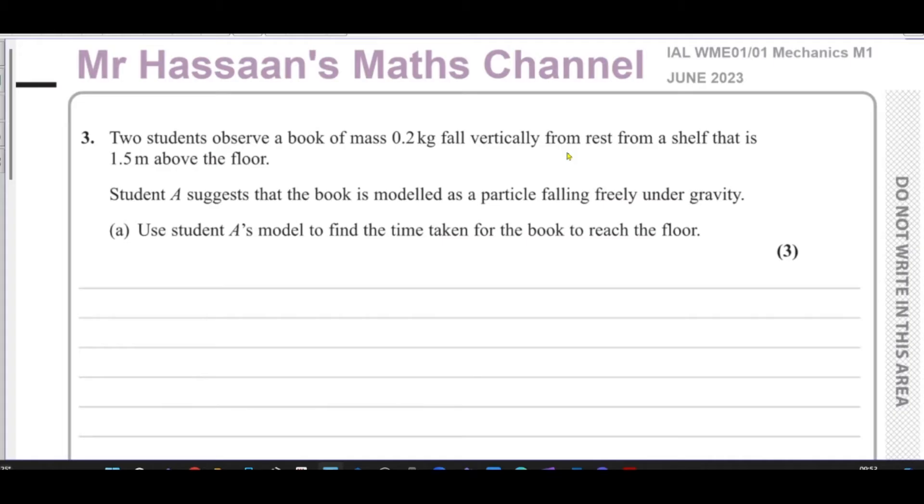And this question here is about vertical motion under gravity. It says two students observe a book of mass 0.2 kilograms fall vertically from rest from a shelf that is 1.5 meters above the floor. Student A suggests that the book is modeled as a particle falling freely under gravity. Use student A's model to find the time taken for the book to reach the floor.